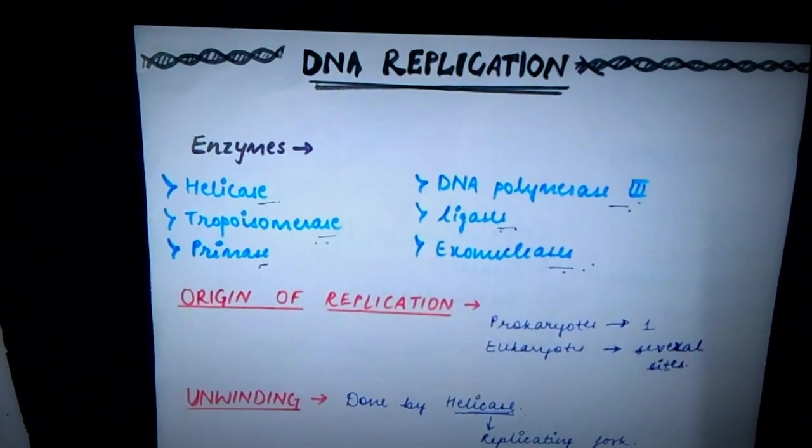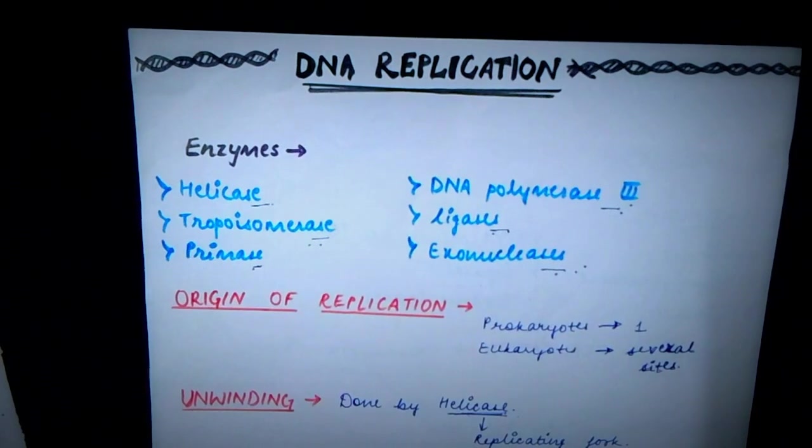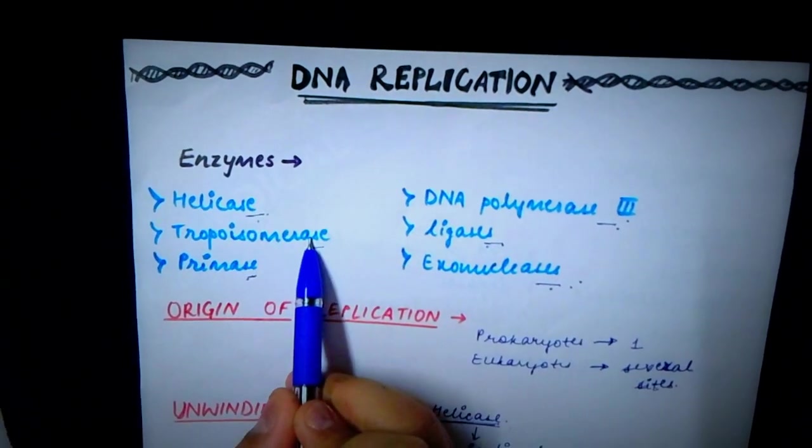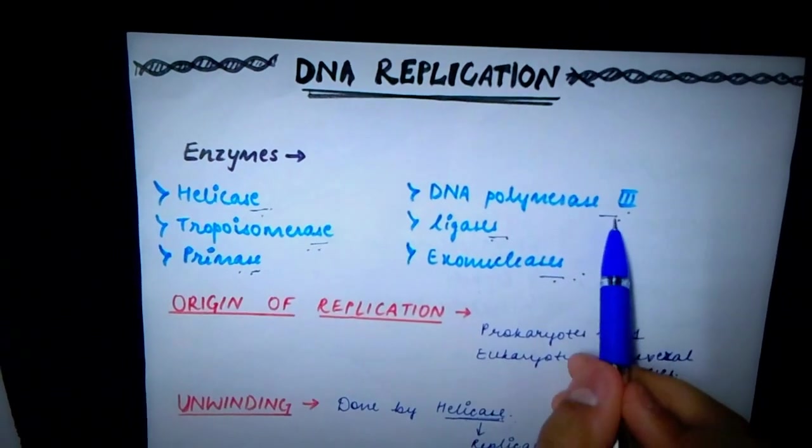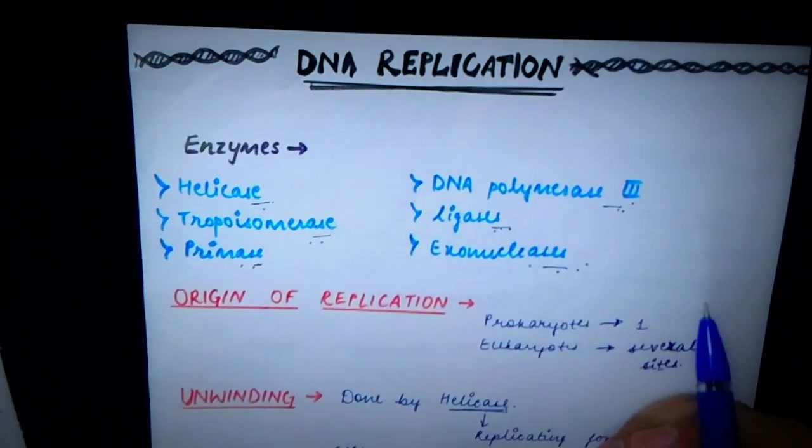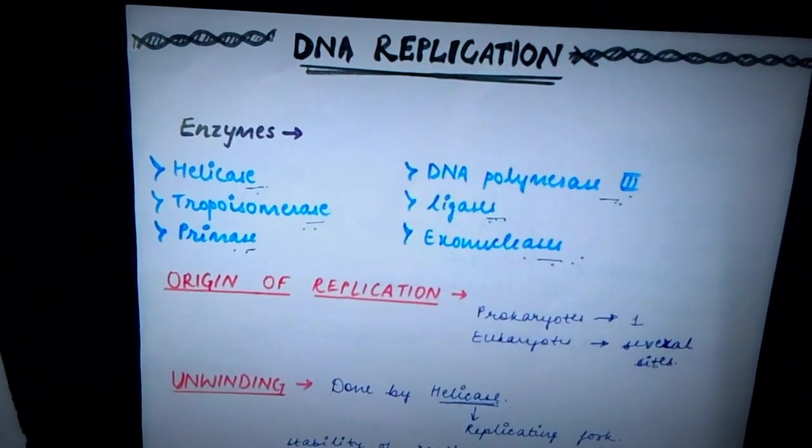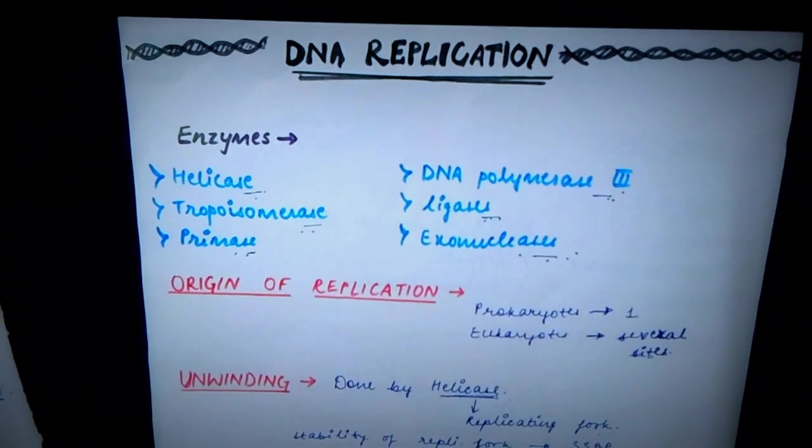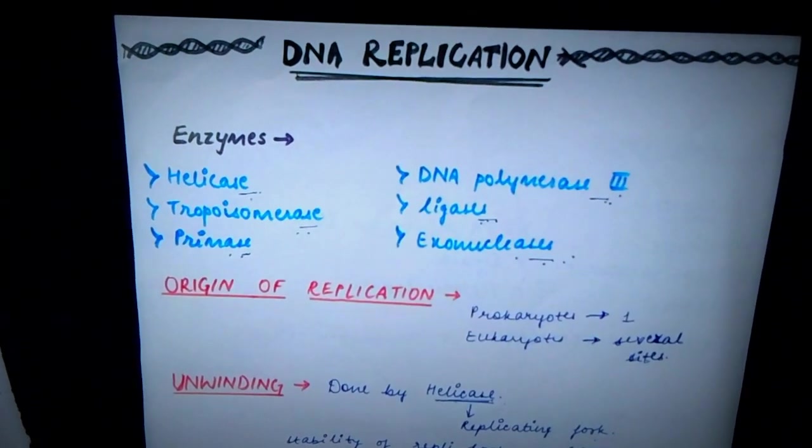Now the process of DNA replication requires a number of enzymes. These enzymes are helicase, topoisomerase, primase, DNA polymerase 3, ligases and exonucleases. We would be studying about the function of each of these enzymes in detail in this video. And so let's get started.